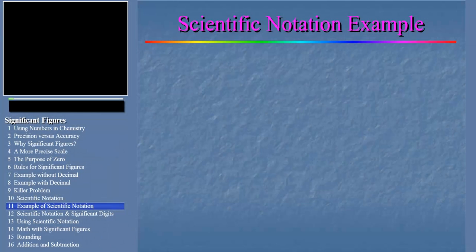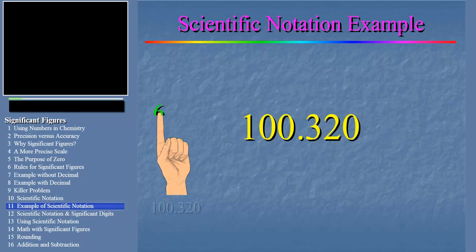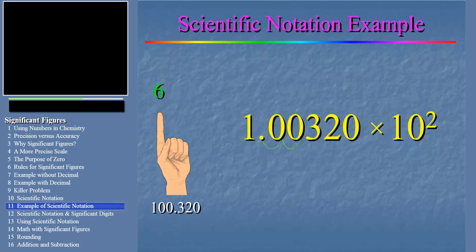Remember our previous example, 100.320? As you recall, this number has six significant figures. How would we convert this number to scientific notation? Well, we move the decimal over to the first significant digit and multiply the resulting number by ten to some power. The power is the number of spaces that we move the decimal point. Let's see how this works. The first move gives us 10.0320 times ten to the first. We move the decimal point a second time to place it right after the first digit. This gives us 1.00320 times ten squared, and we're all done. Notice that the power of ten is equal to the number of times we move the decimal point. You can see that when the number is written in scientific notation, we can clearly count the six significant digits.